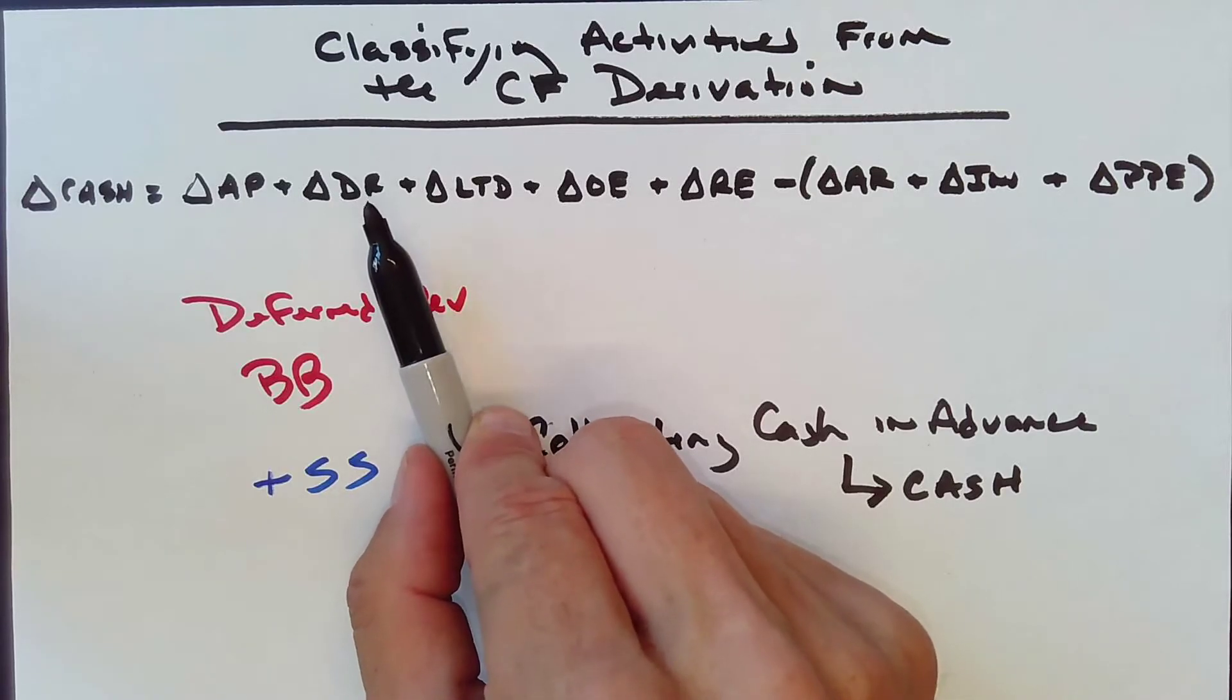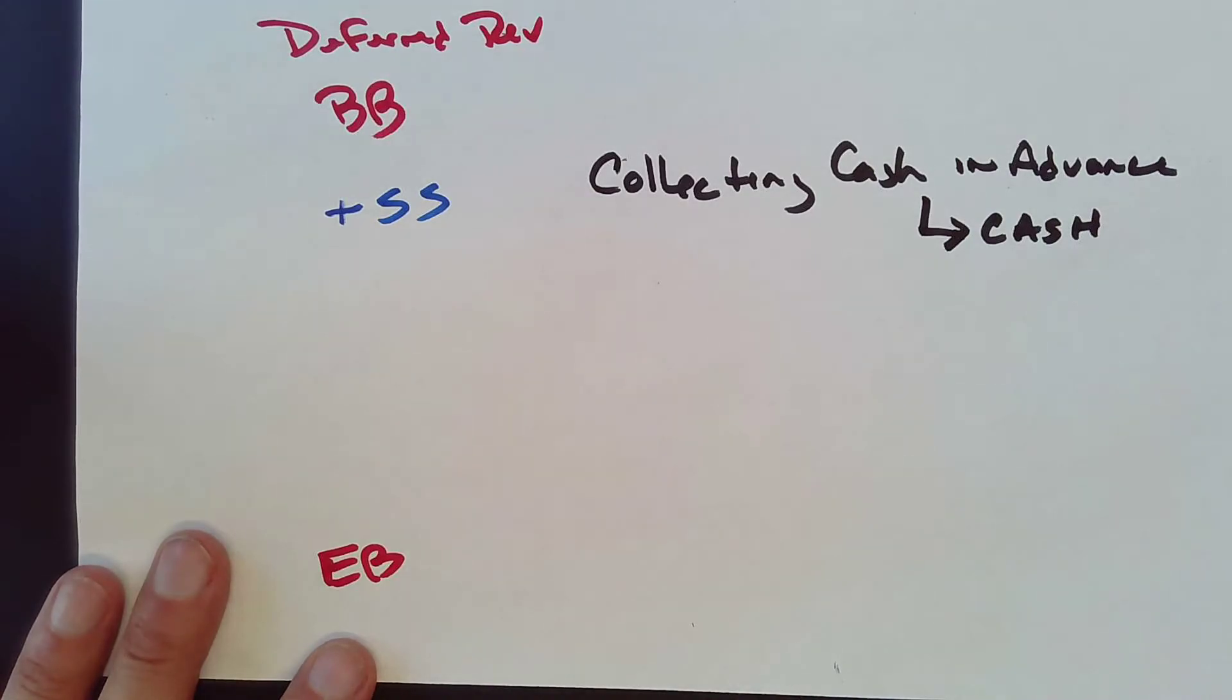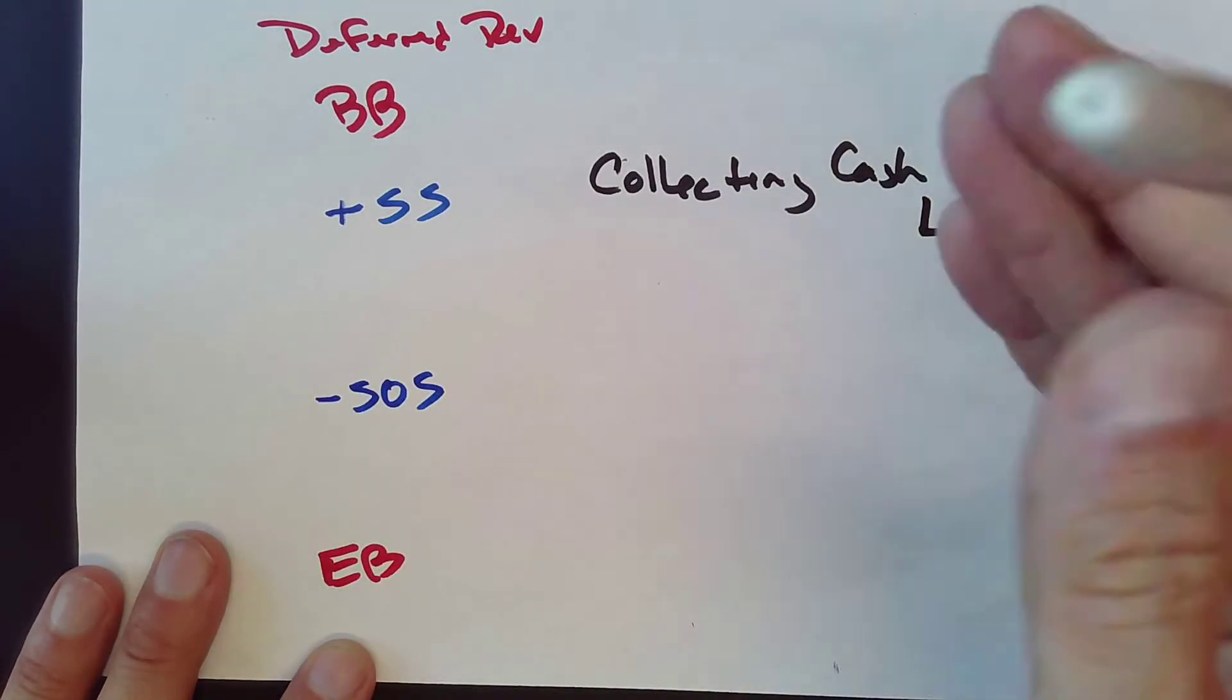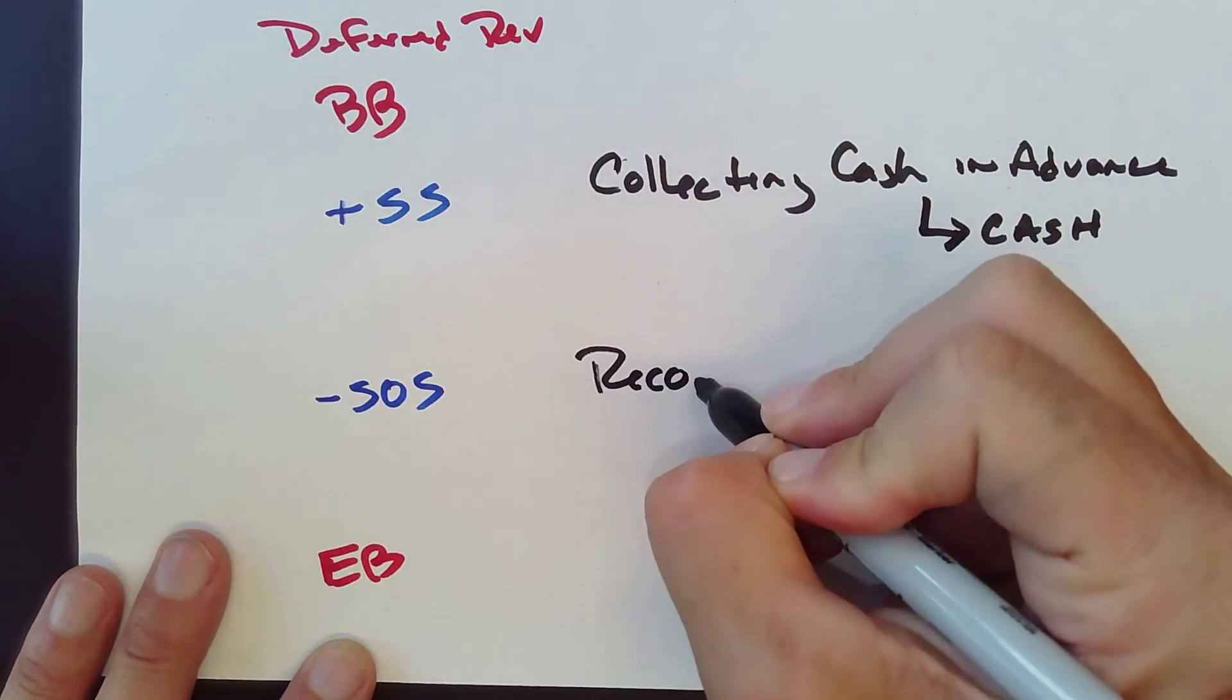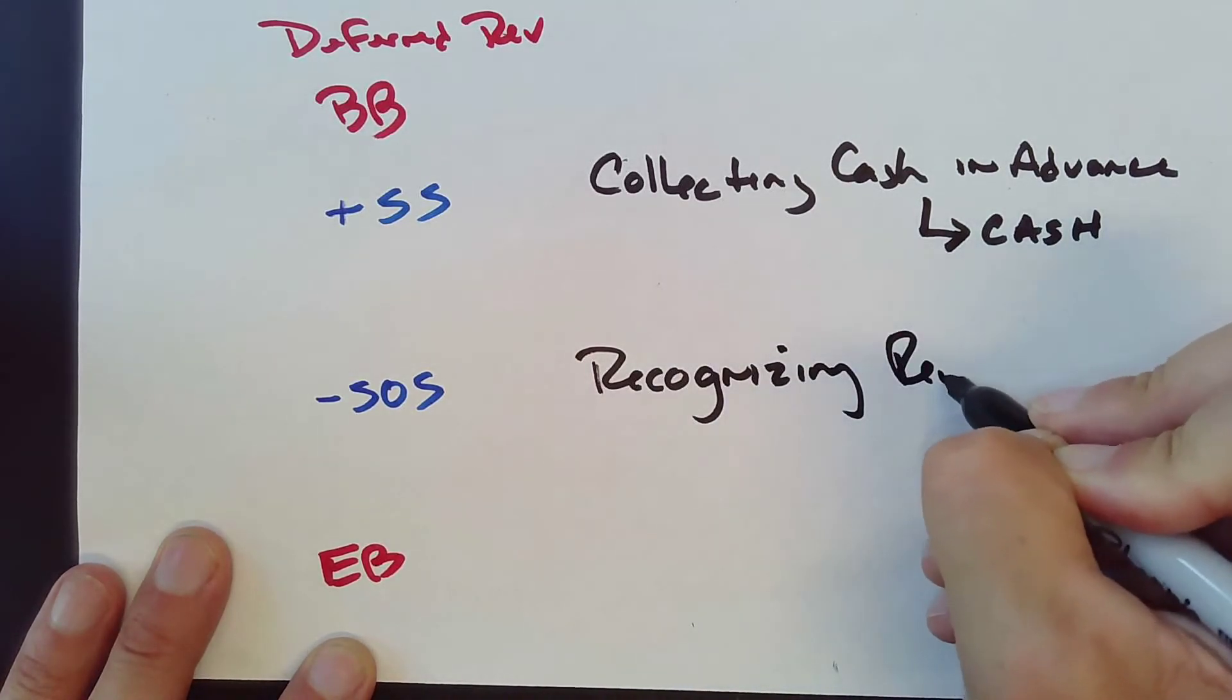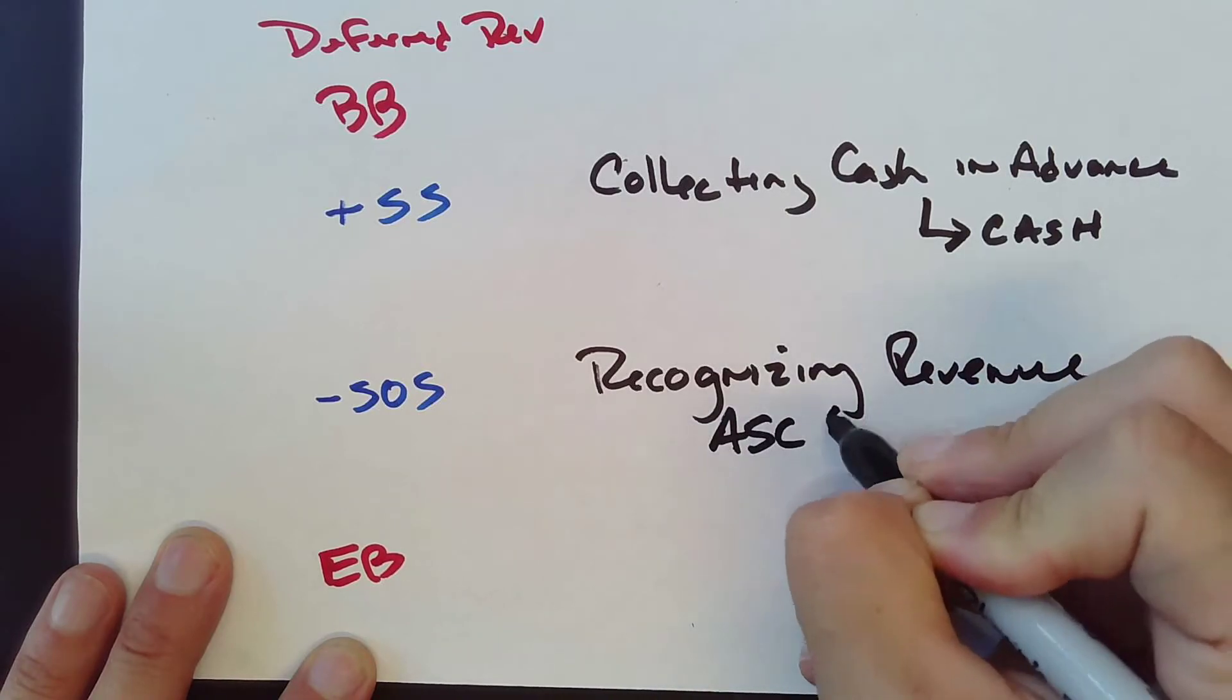I may not get what makes it go down, though. So what makes this go down? Recognizing Revenue under ASC 606.